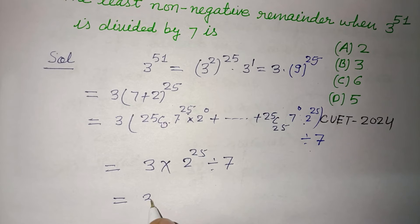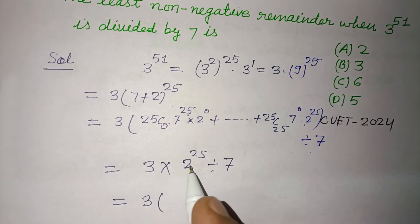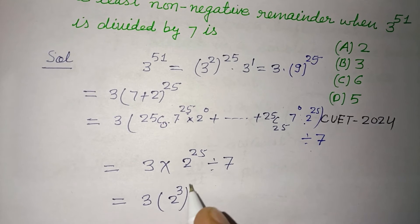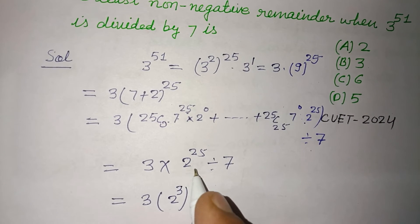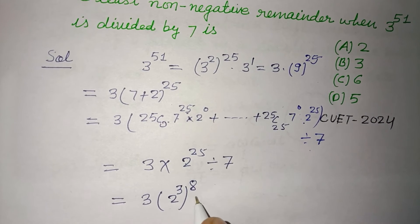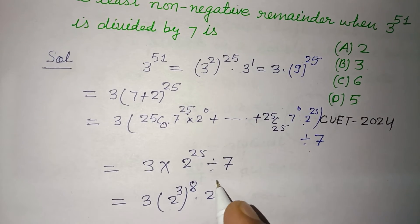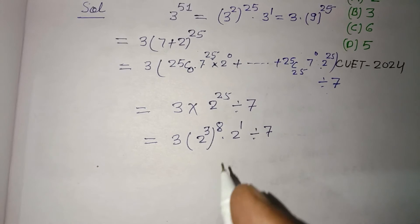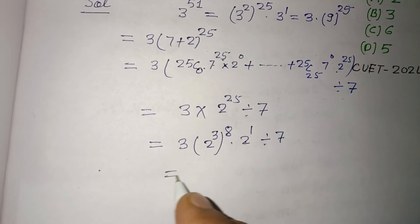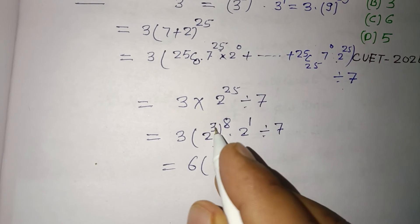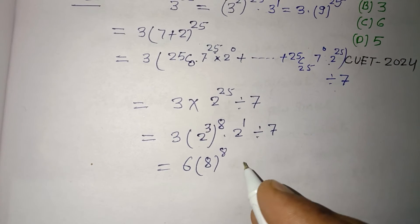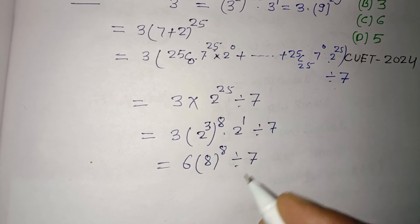Now 3 times 2^25 can be written as 3 times (2^3)^8 times 2^1 divided by 7. Since 2^3 equals 8, this becomes 3 times 2 times 8^8 divided by 7, which is 6 times 8^8 divided by 7.